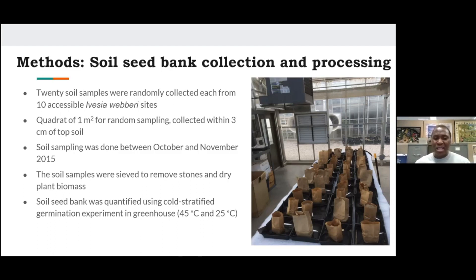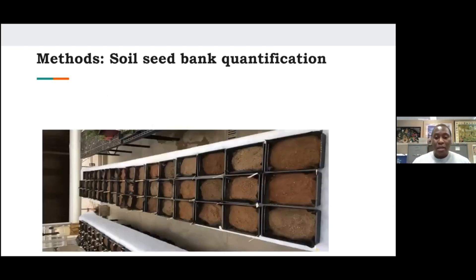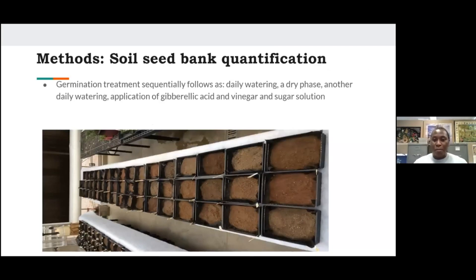We chose the seedling emergence method because it quantifies active or living seeds, not dead seeds. Also, some plants at these sites produce very tiny seeds that could be lost during physical extraction. For quantification, we used cold stratification in the greenhouse. Treatments to break dormancy included daily watering, dry phases, application of gibberellic acid, and other methods.